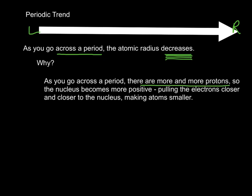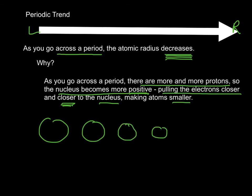as you go across, there's more and more protons, so the nucleus becomes more positive, so it's pulling the electrons closer and closer to the nucleus, making the atoms smaller. So as you add more protons to the nucleus, think of it as pulling on the electrons more and more. So as you go across, the atoms tend to get a little bit smaller each time.